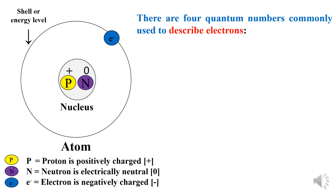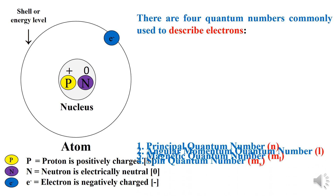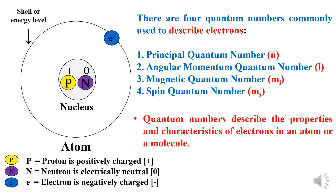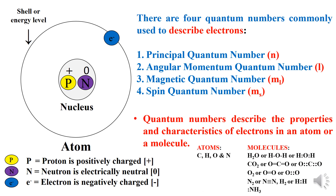There are four quantum numbers commonly used to describe the electrons in an atom: the principal quantum number, angular momentum quantum number, magnetic quantum number and spin quantum number. Quantum numbers describe the properties and characteristics of electrons in an atom or a molecule.